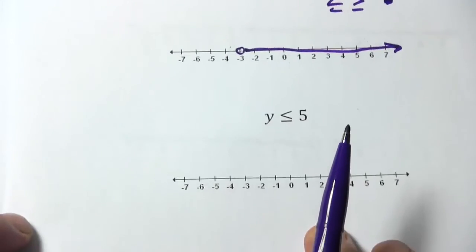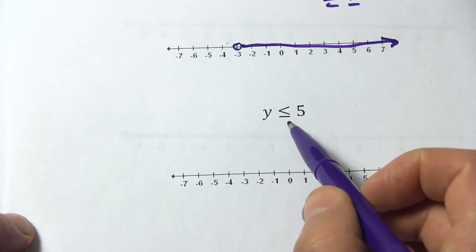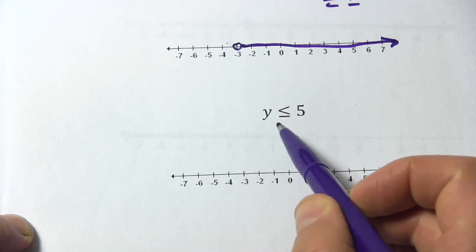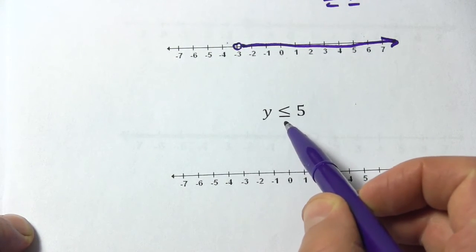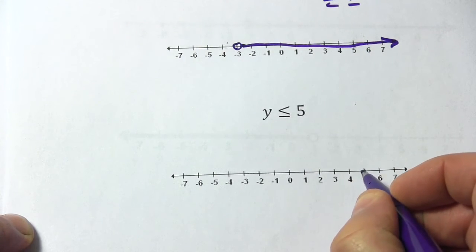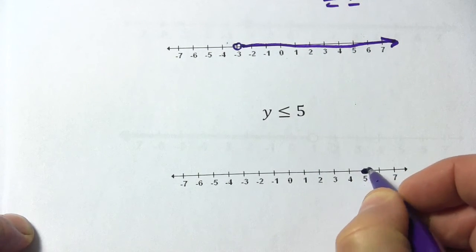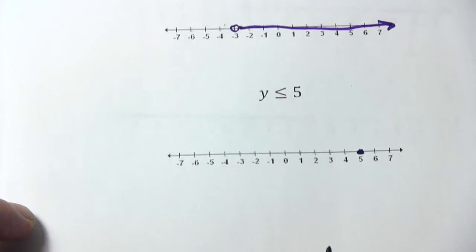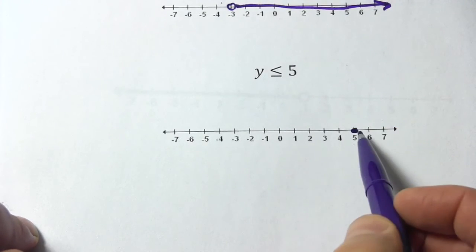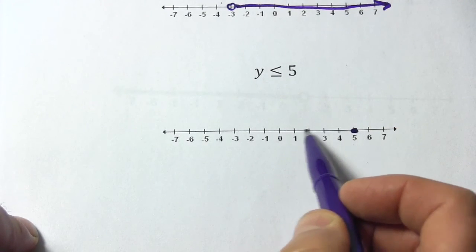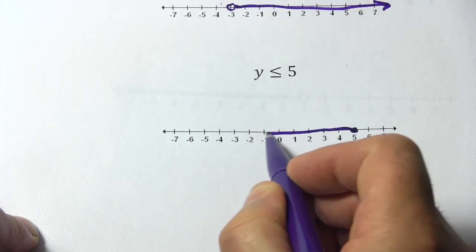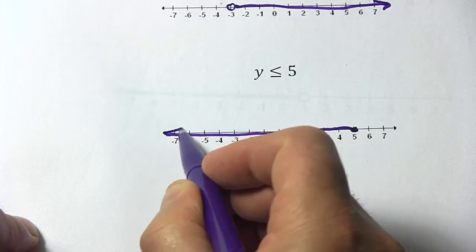Let's try one more. We have y is less than or equal to 5. This is less than or equal to, so it's going to be a solid dot. We're going to put a solid dot on the 5. And then it says less than, so we're going to go in the direction of the numbers getting smaller, and our arrow would look like that.